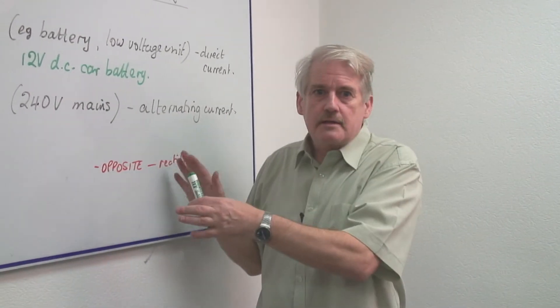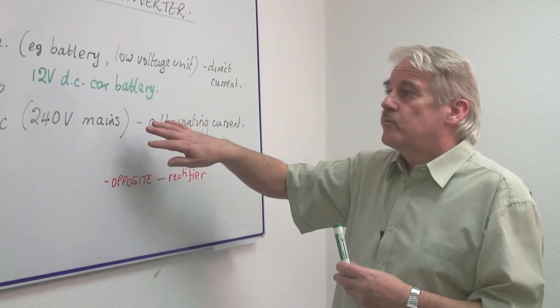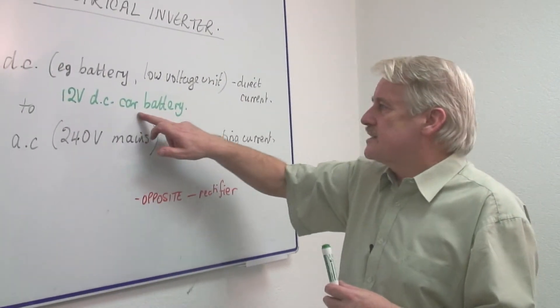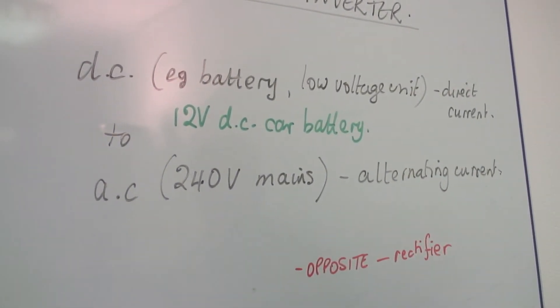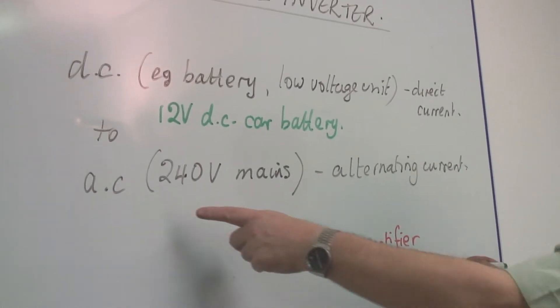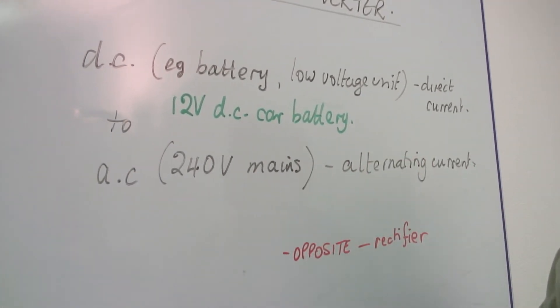Now the actual way it does this is very complex, but let's look at the result of it. What you're able to do is take what is direct current, that is current flowing all in one direction, into alternating current going backwards and forwards just as in the mains.